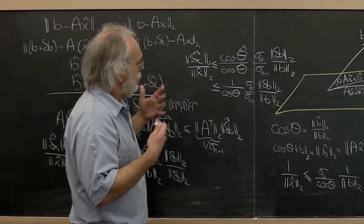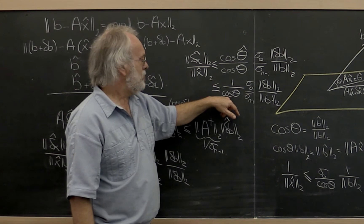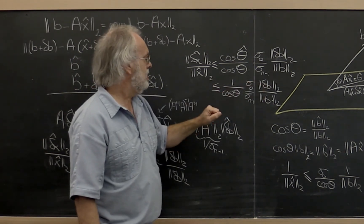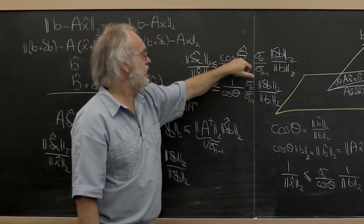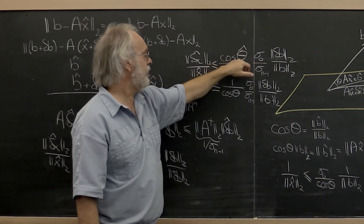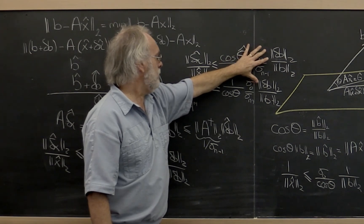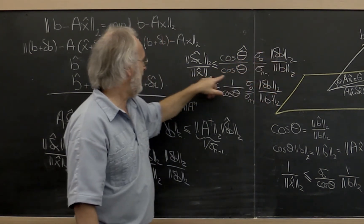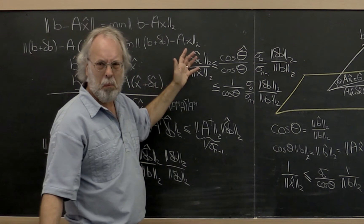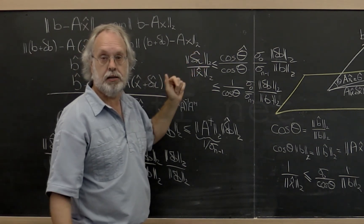You may want to think through: what happens if cosine(θ) = 0? What does that mean in that picture? And what happens if cosine(θ̂) = 0? Then you're telling me that a change in the right-hand side has no effect on the solution at all. What does that mean? Think about it.